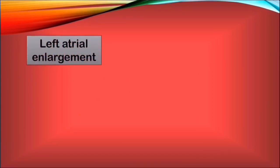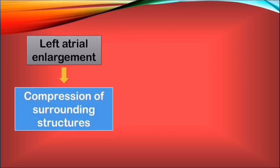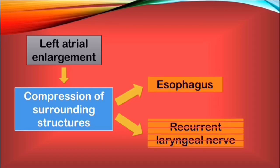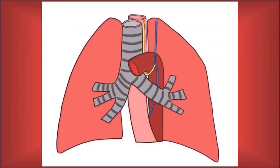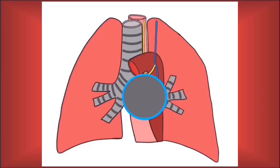Secondly, the left atrial enlargement that develops because of the mitral stenosis will lead to the compression of surrounding structures. Considering the left atrium is the most posterior chamber of the heart, the anatomical components directly affected will be the esophagus and the left recurrent laryngeal nerve, leading to some of the symptoms associated with this valvular disease. We can observe the left vagus nerve descending in proximity to the aorta, the left recurrent laryngeal nerve encircling the aortic arch inferiorly to ascend towards the larynx, and the esophagus. If the left atrium gets larger than it should be, the esophagus and the left recurrent laryngeal nerve will get compressed, leading to their functional impairment.